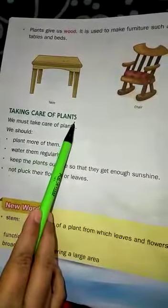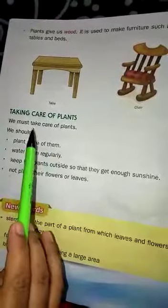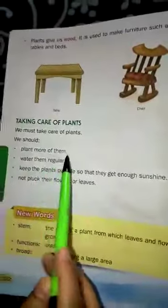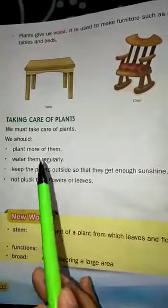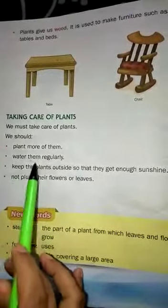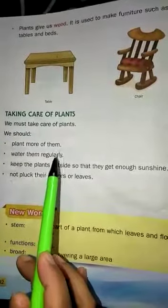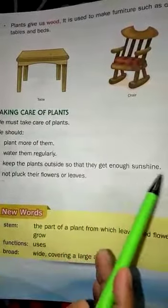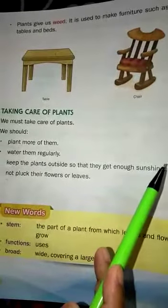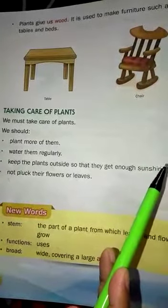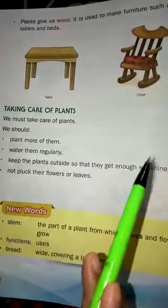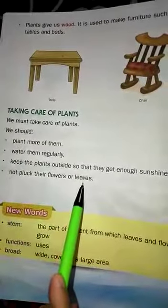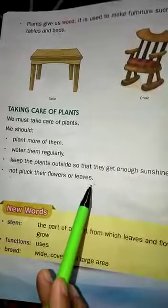Now taking care of plants. As plants are very useful, it's our responsibility to take good care of plants. We should plant more trees and we should not cut trees. Water them regularly, as plants need water. Keep the plants outside so that they can get enough sunshine — plants need sunshine also to grow. We need to keep a plant outside the house so that they can get enough sunshine. Try not to pluck their flowers or leaves.